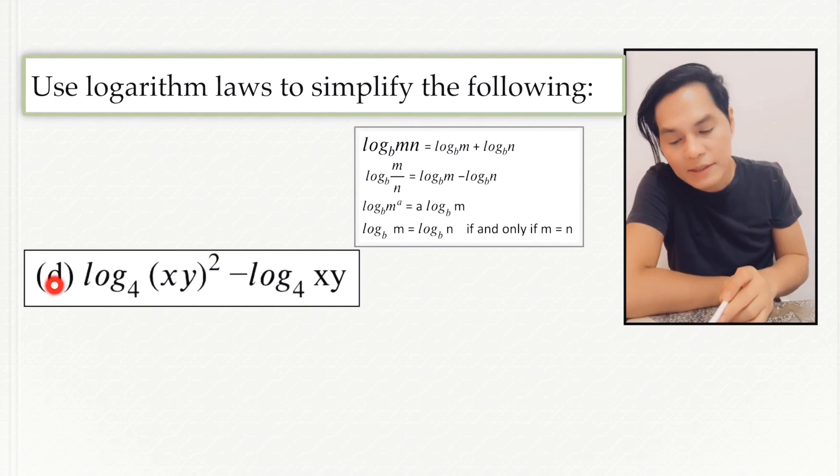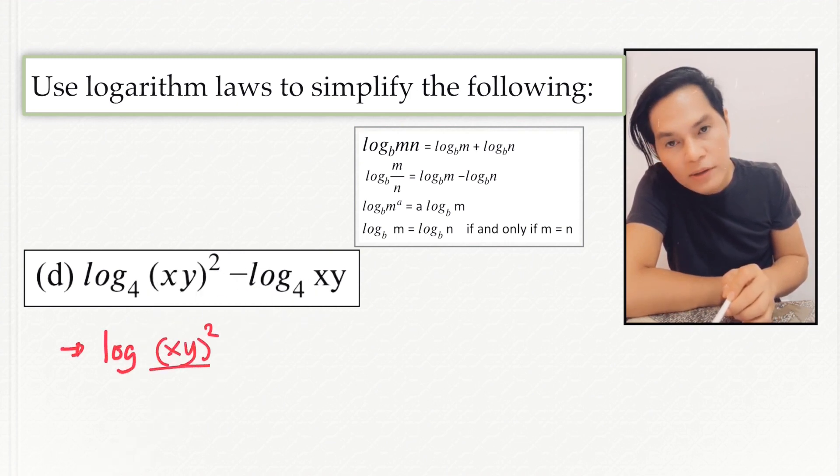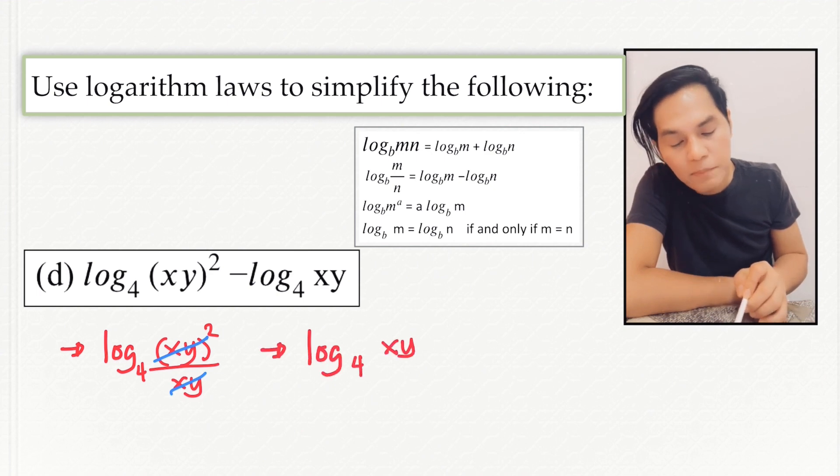Okay, now we are in our last example for letter D. Look at this. This is subtraction, and so we can just simply divide these two expressions here. And then they have common factors. So we cancel this one and the remaining is the log of xy to the base 4.